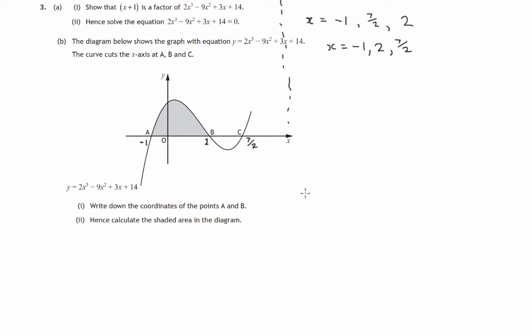And in part B, 1, it asks us to write down the coordinates of the points A and B. So the coordinates are negative 1, 0 and 2, 0. Hence, calculate the shaded area in the diagram.